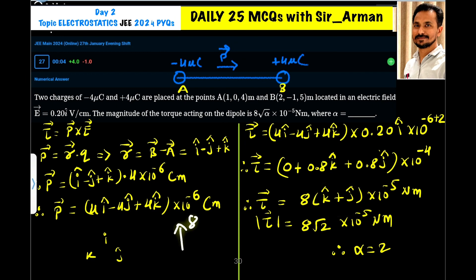Now if you add this vector, one is pointing in J direction, one is pointing in Y direction, then the answer will be 8 root 2, the resultant you can just use the vector addition rule or Pythagoras. So it becomes 8 root 2 into 10 raised to minus 5 Newton meter. This is the magnitude. So this is 8 root 2 into 10 raised to minus 5. If you compare with this expression, it is 8 under root alpha, so here alpha is nothing but 2.